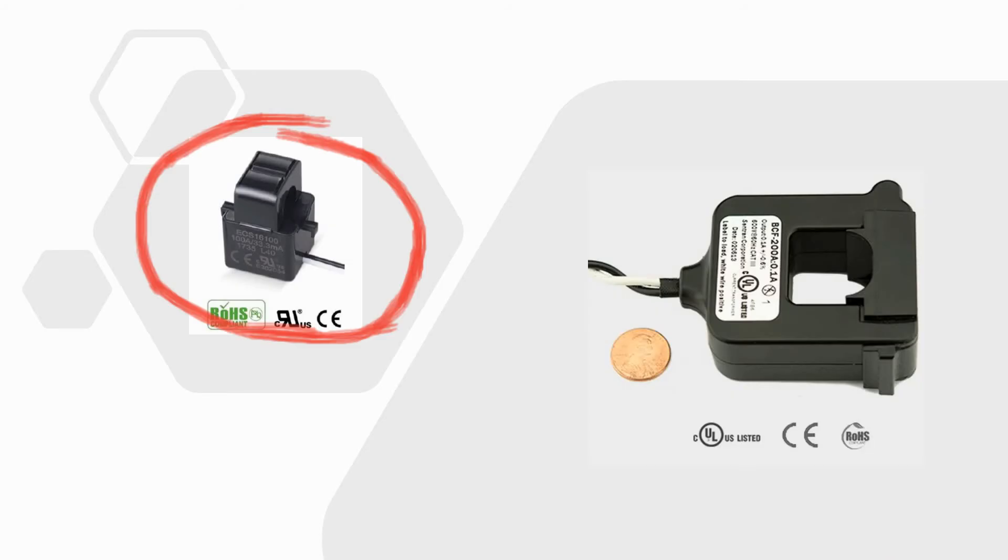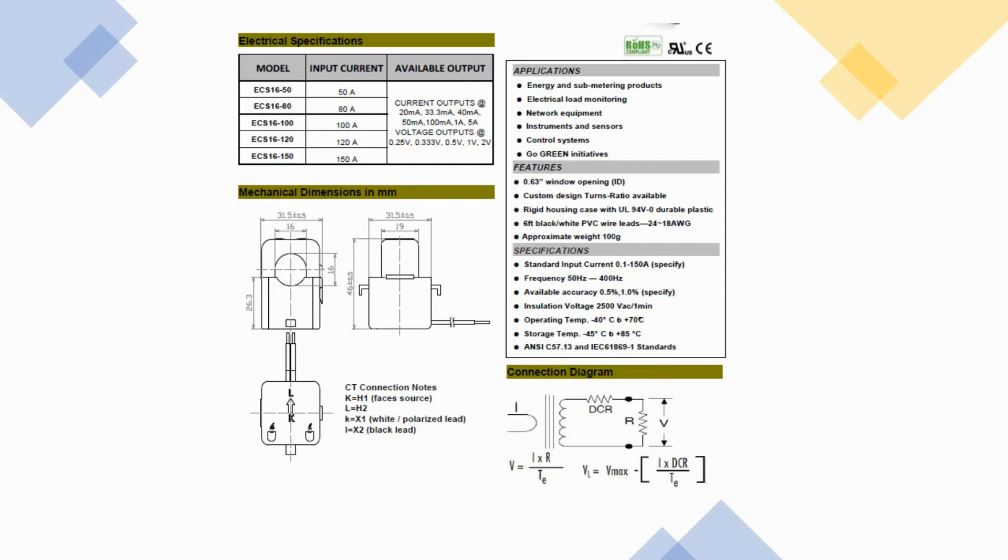Qualytrol provides two types of split-core CTs for AC current measurement. Both come with 15 feet 2-wire pigtail. The CTs provided for measuring phase currents have 0.5% accuracy, whereas the CTs provided for heaters and motor currents have 1% accuracy.